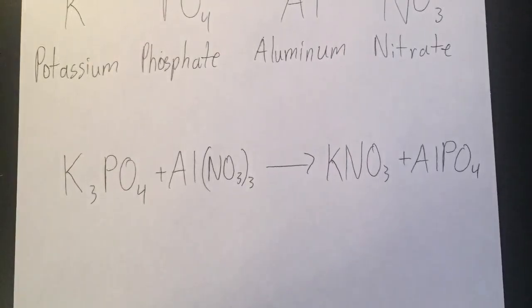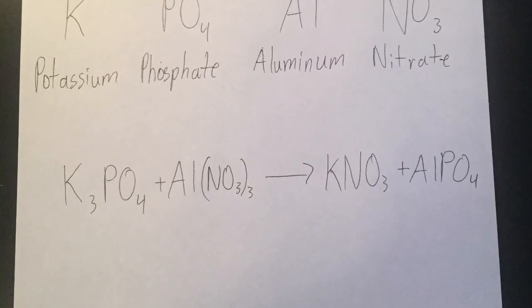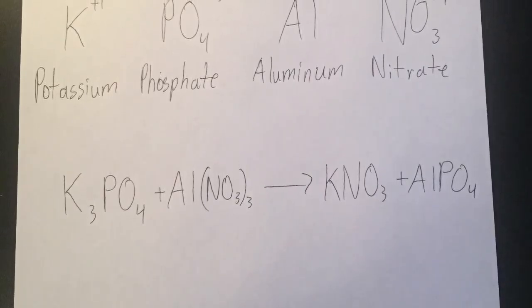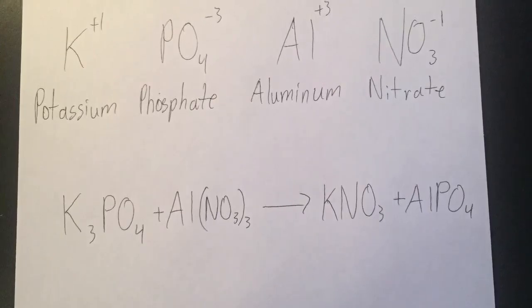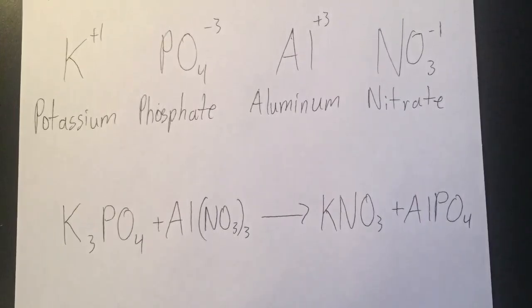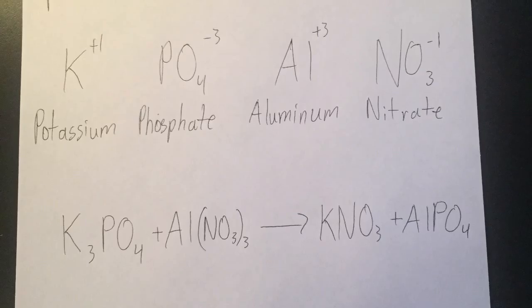Since potassium has a charge of plus one and nitrate has a charge of minus one, you'll need one of each. And also, since aluminum has a charge of plus three and phosphate has a charge of minus three, you only need one of each as well.